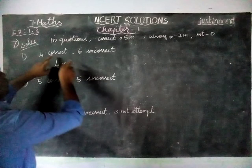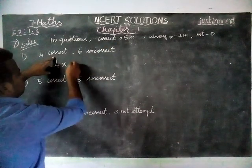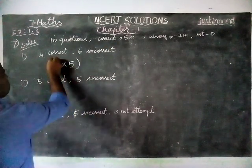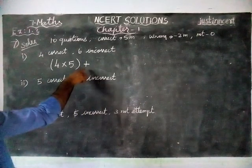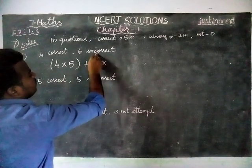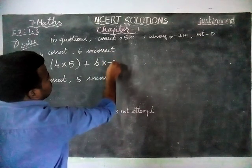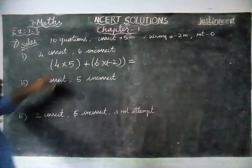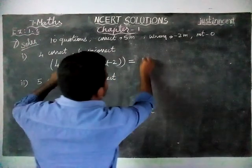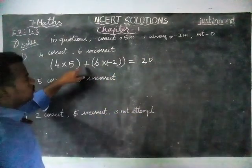4 into correct answers 5 marks, 5 plus, we have to find total score so we are adding this. Next, 6 into incorrect answer is minus 2 is equal to 4 5s are 20 plus sign.